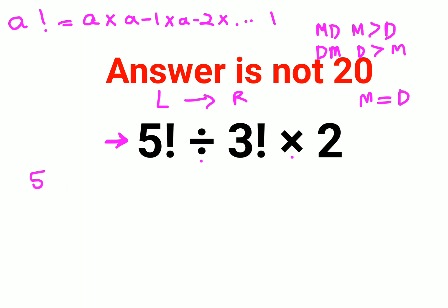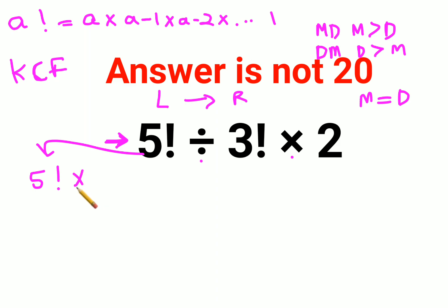So first we will do 5 factorial. Whenever there is a division sign, we follow the rule of KCF — K means you keep the first number as it is, C stands for changing the division sign to multiplication, and F stands for flipping, or rather the reciprocal of the next number. So the reciprocal of 3 factorial is 1 upon 3 factorial into 2.